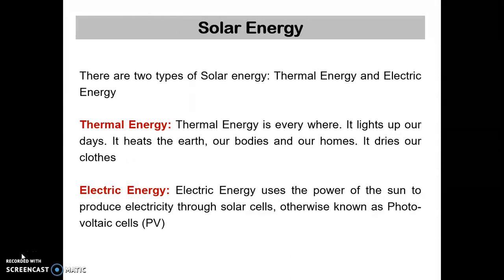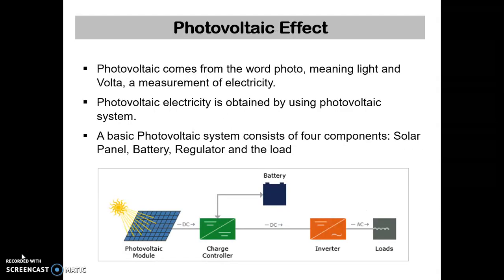Solar energy is of two types: thermal energy and electric energy. Thermal energy is everywhere — it lights up our days, heats the earth, our bodies, and our homes, and dries our clothes. Electric energy uses the power of the sun to produce electricity through solar cells, otherwise known as photovoltaic cells.